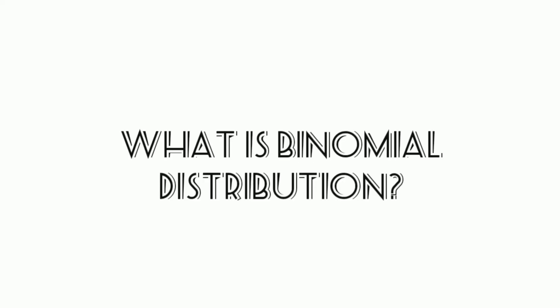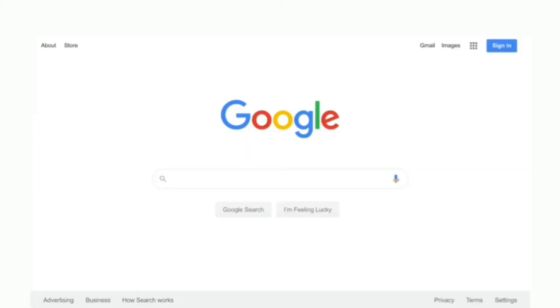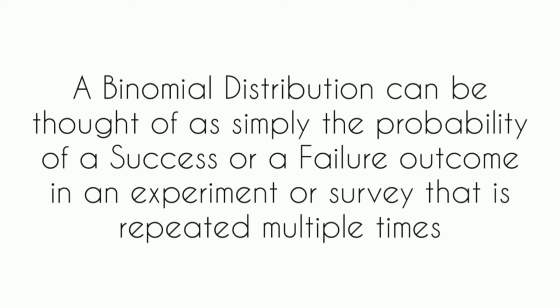The first W is what. So what is binomial distribution? The answer can be found with a quick Google search where it's explained: a binomial distribution can be thought of as simply the probability of success or failure outcome in an experiment or survey that is repeated multiple times. That's pretty simple, don't you think?